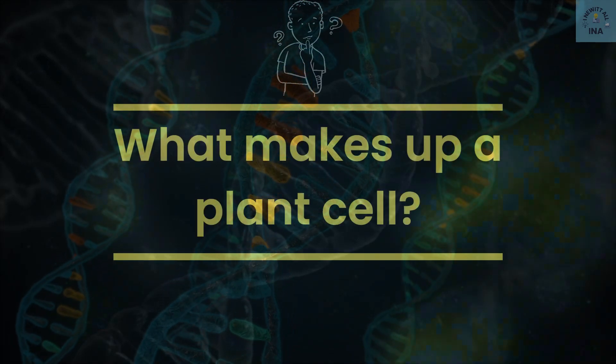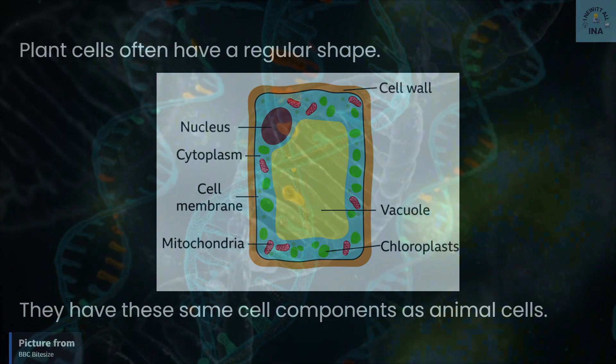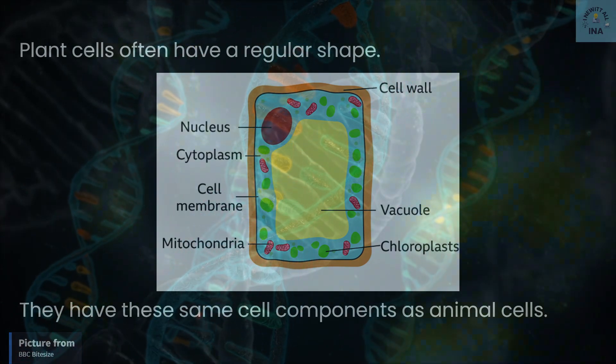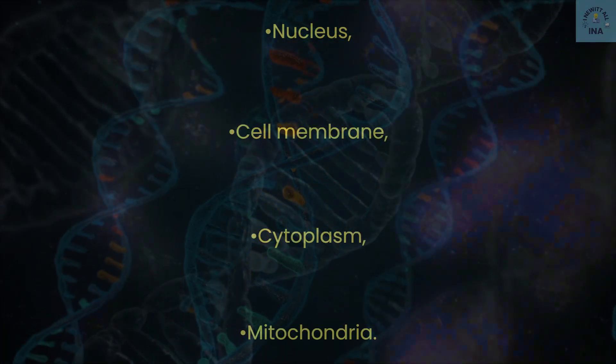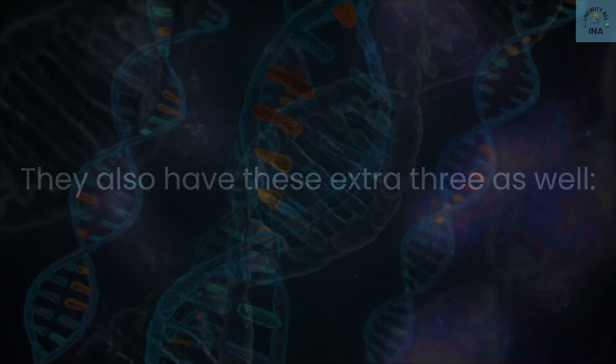What makes up a plant cell? Plant cells are often a regular shape. They have these same cell components as animal cells: a nucleus, cell membrane, cytoplasm, and mitochondria. They also have these extra three as well.